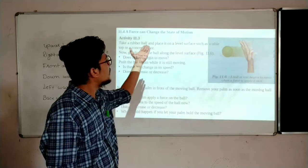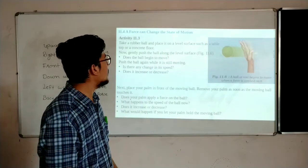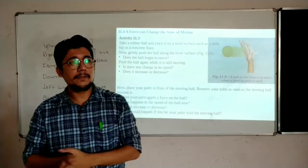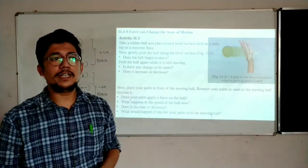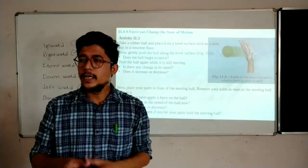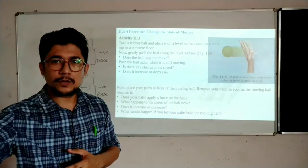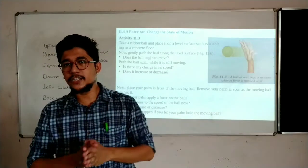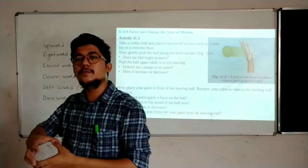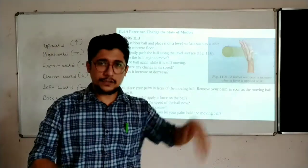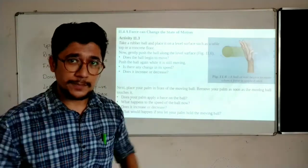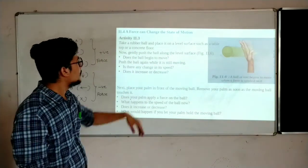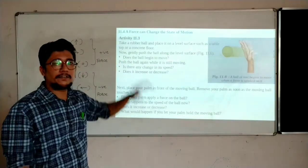A force can change the state of motion. Suppose one bowler is bowling a ball and a batsman is hitting the same ball out of the boundary. What does the batsman do? He changes the state of motion — from the ball moving toward him, he hits it in the opposite direction, and that ball goes out of the boundary with some velocity. So a force can change the state of motion. Let us take an example in activity 11.3.